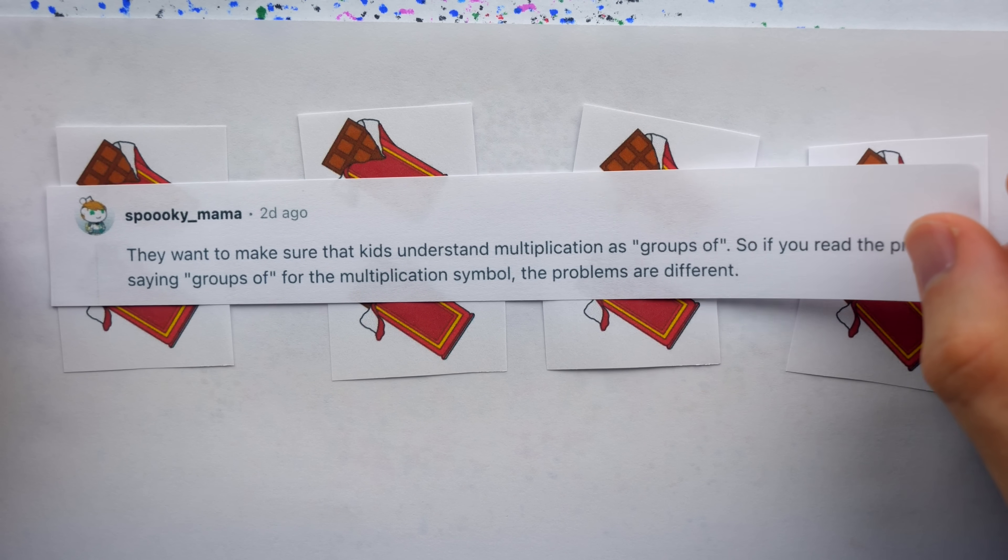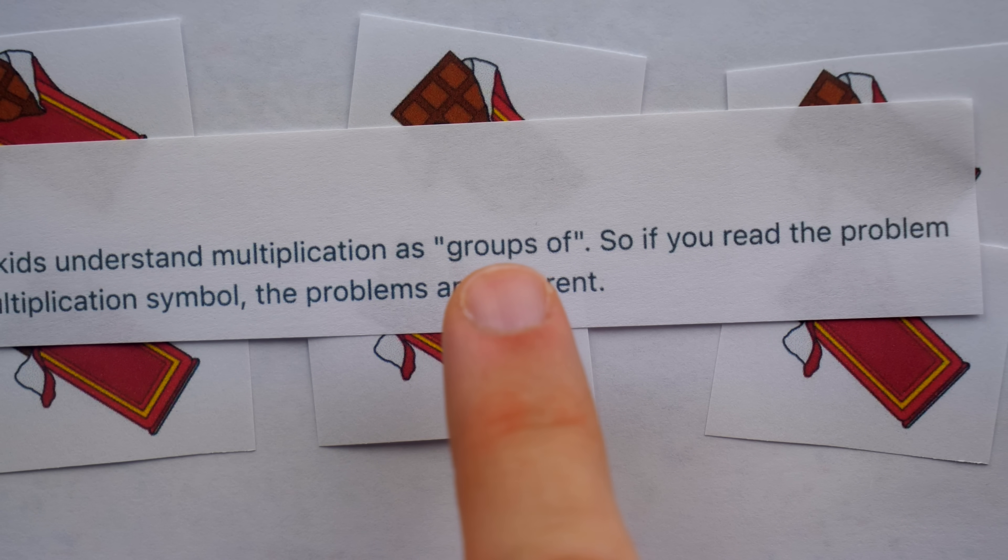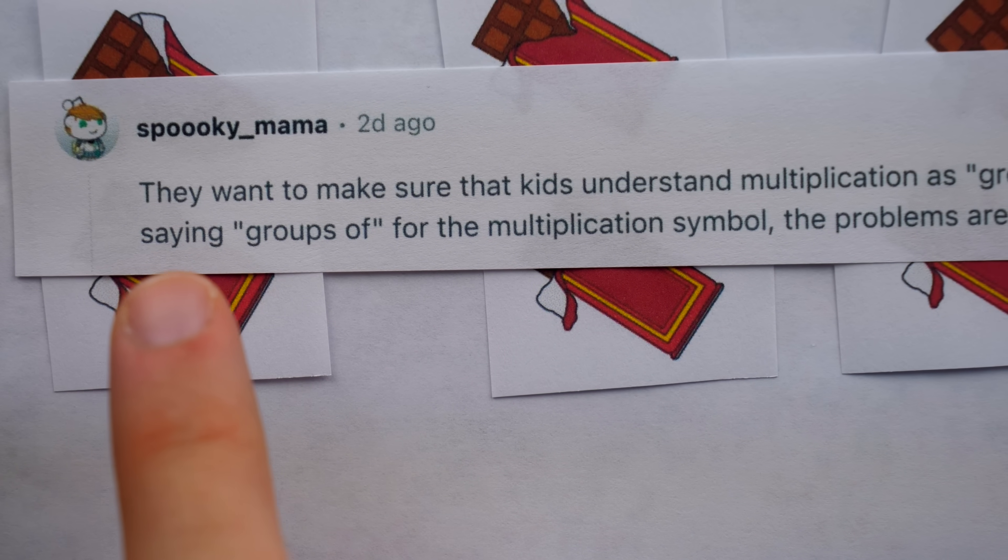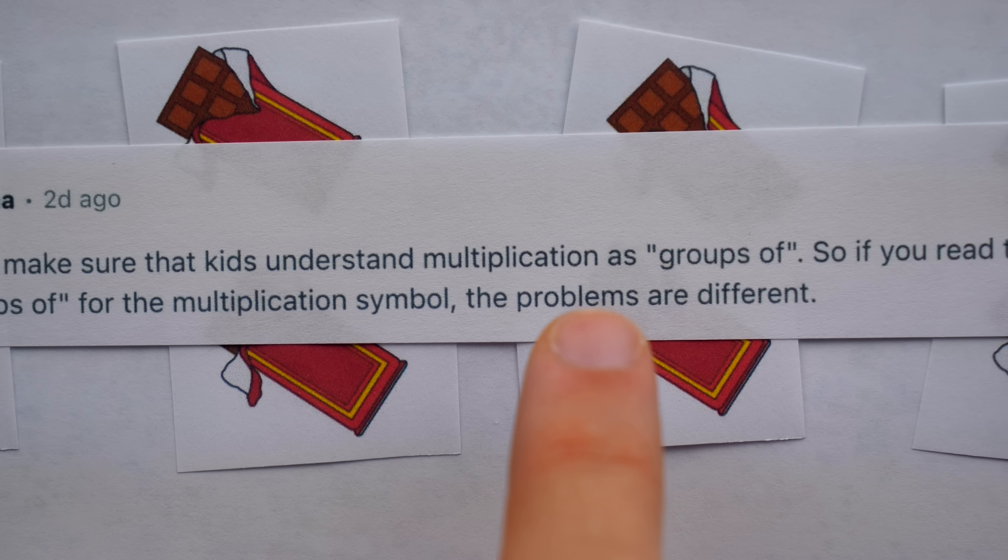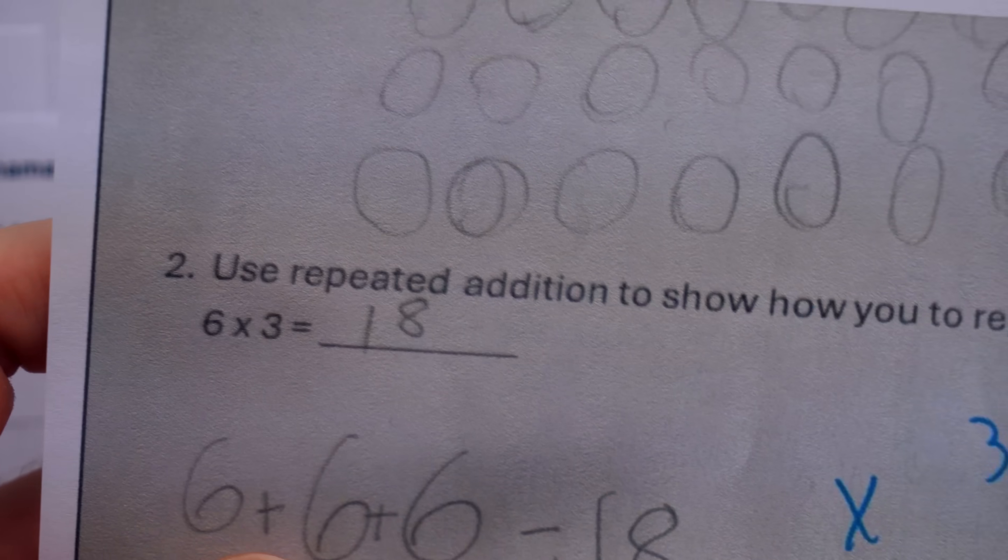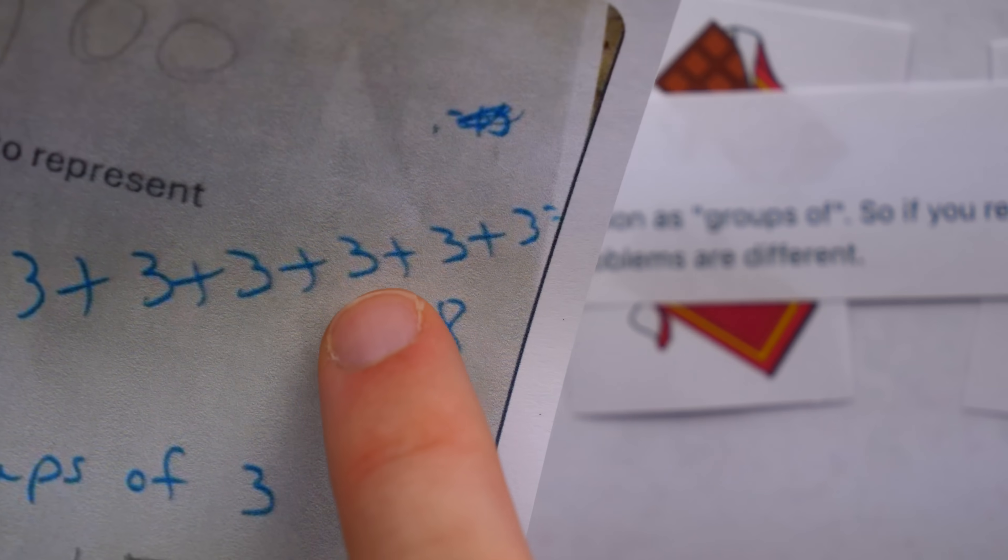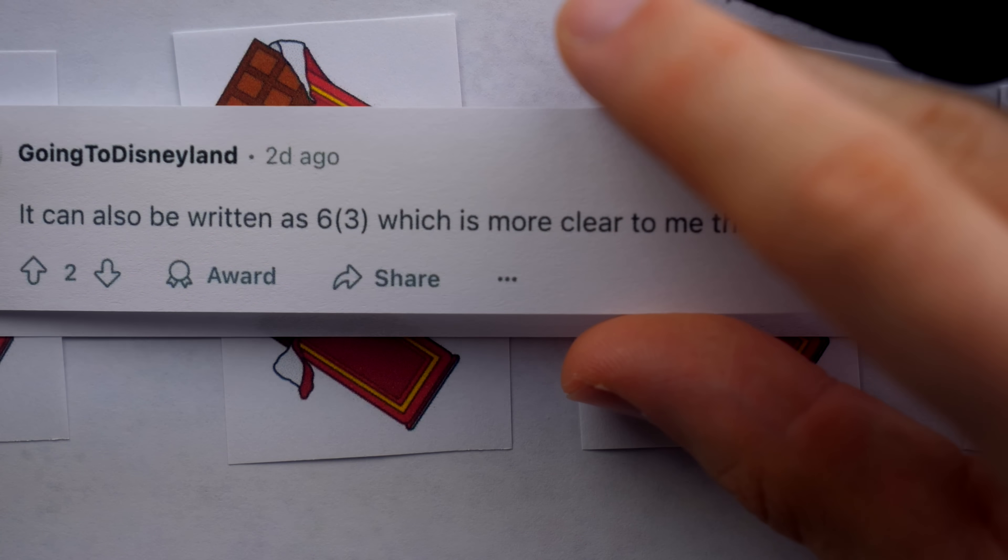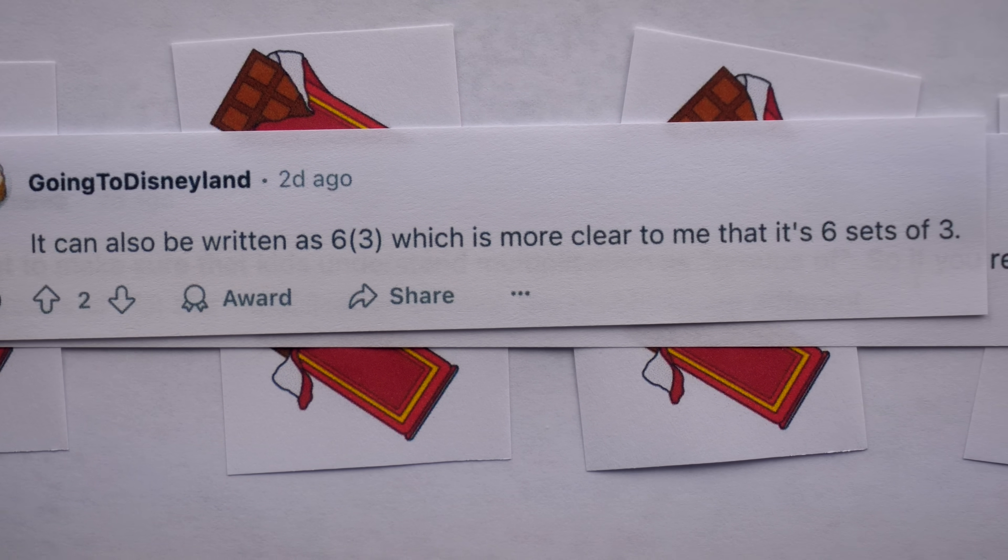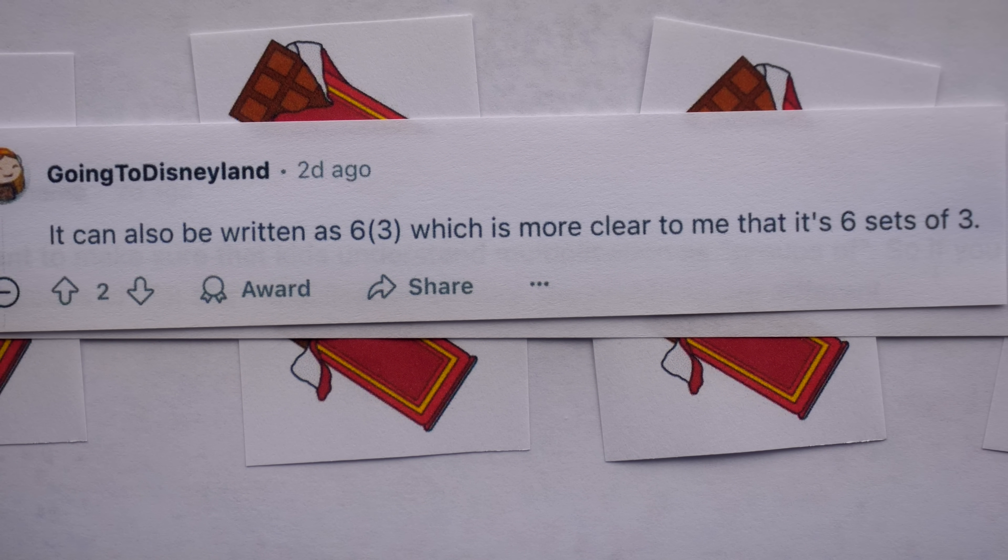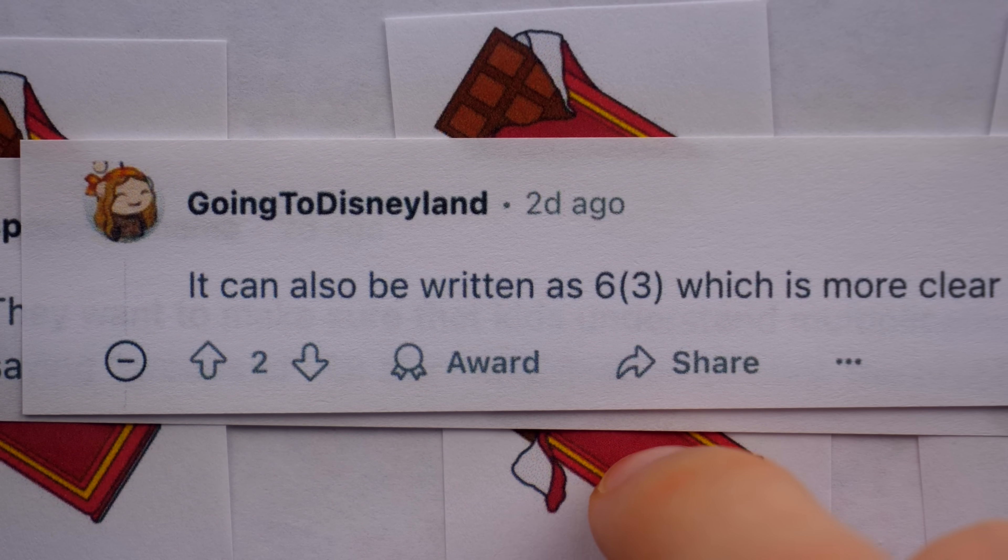SpookyMama said simply, the teacher wants to make sure that kids understand multiplication as groups of. So if you read the problem saying groups of for the multiplication symbol, the two problems are different. The teacher, of course, has said that the answer should be 6 times 3 is 6 groups of 3. Going to Disneyland said it can also be written as 6 parentheses 3, which is more clear to me that it's 6 sets of 3. I don't think that notation is going to win over any third graders or their teachers.